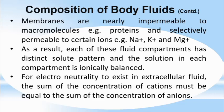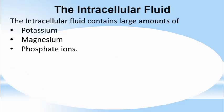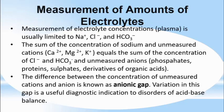For electroneutrality to exist in the extracellular fluid, the sum of the concentration of cations must equal the sum of the concentration of anions. The extracellular fluid contains large amounts of sodium, chloride, and bicarbonate ions, plus nutrients such as oxygen, glucose, fatty acids, and amino acids. While intracellular fluid contains large amounts of potassium, magnesium, and phosphate ions.